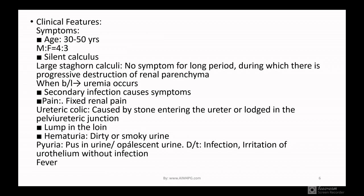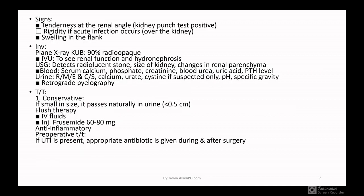Now what are the clinical features of renal stone? Stones commonly occur in the age of 30–50 years; male to female ratio is 4:3. Silent calculi can cause no symptoms for a long period during which there is progressive destruction of renal parenchyma. When bilateral, uremia occurs. Secondary infection also causes symptoms. Symptoms include pain — ureteric colic caused by a stone entering the ureter or lodged at the pelvi-ureteric junction; lump in the loin; hematuria; dirty or smoky urine; pyuria or purulent urine due to infection or irritation of urothelium; and fever if infection is present. Signs include tenderness at the renal angle, kidney punch test positive, rigidity if acute infection occurs, and swelling in the flank.